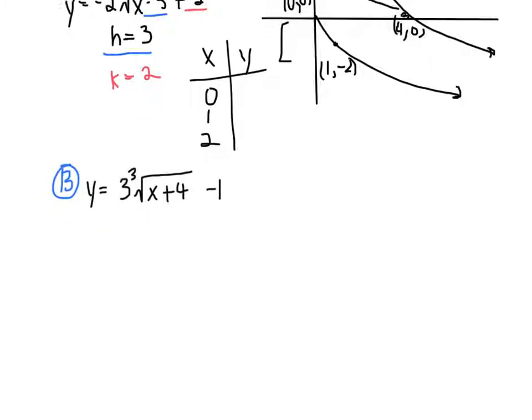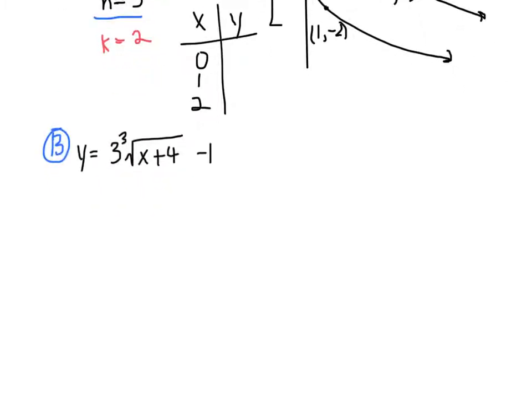Next we have the problem y equals 3 times the cube root of x plus 4 minus 1. So once again we're going to sketch our parent graph. So we have our axes, and to sketch our parent graph we need our point 0, 0.